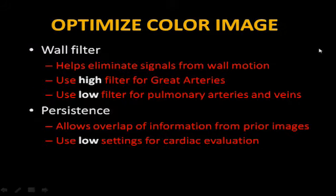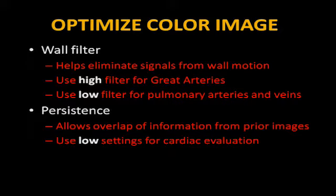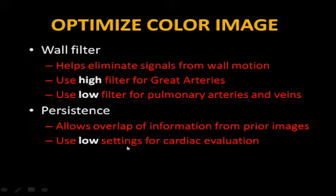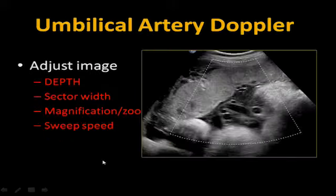The wall filter helps eliminate signals from wall motion. Use a high filter for the heart and great arteries, and a low filter for pulmonary arteries and veins where we don't have to worry about wall motion but want to see more flow. Persistence is overlap of information from prior images — for cardiac, keep that low so we don't have a lot of overlap from prior images.